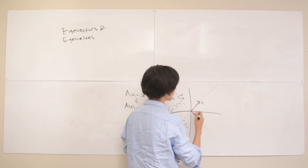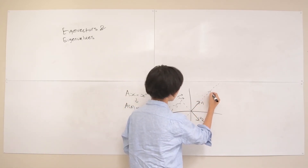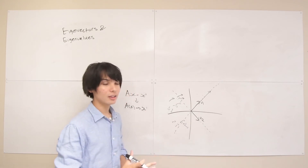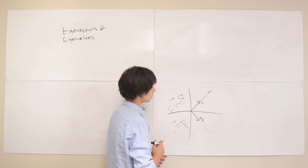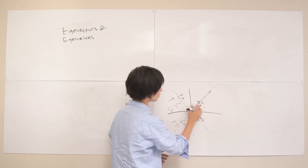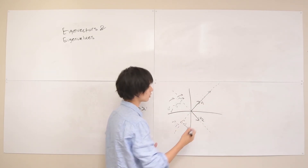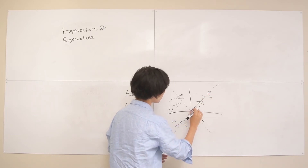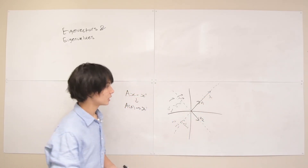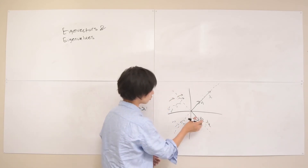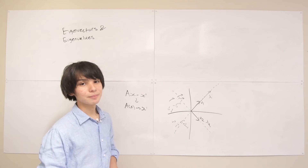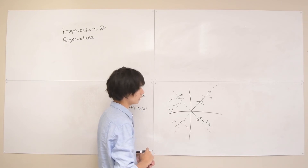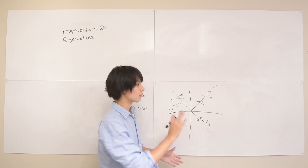These eigenvectors can scale up and down — v1 might extend to a new length after undergoing transformation A, but it still lies on the same line. The scaling number that scales v1 to this new position after undergoing the transformation is the eigenvalue. The eigenvalue is how much the eigenvector stretches or squeezes after the transformation. Similarly, v2 has some lambda 2 that stretches or squeezes it. Every other point changes direction, but eigenvectors do not.